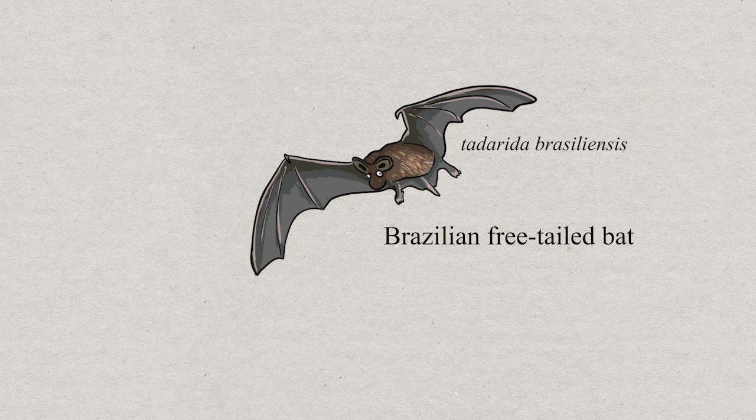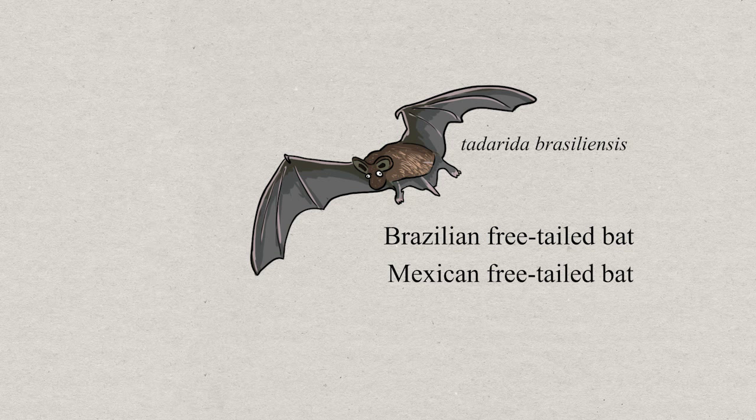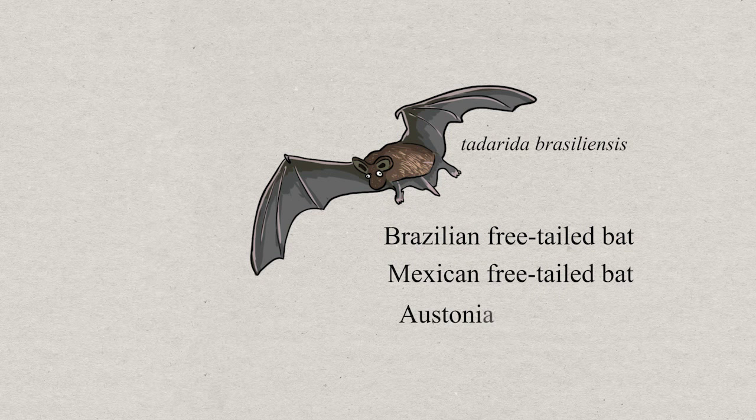Another example is with pest control. Some researchers looked at the Brazilian free-tailed bat, also called the Mexican free-tailed bat, also called the Estonian bridge bat. I guess the bat was just everywhere and then people named it after wherever they came from.